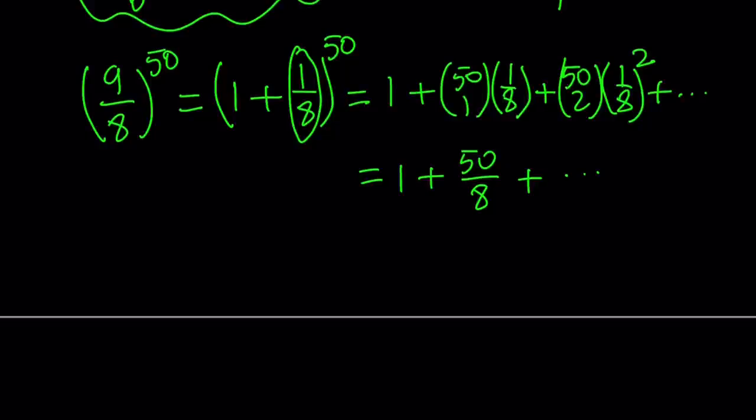Now, why did I do this? Here's my goal. I want to prove that this fraction here, 9 over 8 to the 50th power, which is close to 1, but when you raise it to the 50th power, the answer is going to be greater than 2. That's my claim. And I can easily prove that because 50 over 8 is actually greater than 1. So 1 plus something greater than 1 is going to be greater than 2. That is what I need. So let's go ahead and rewrite it. 9 over 8 to the power 50 is greater than 2. Awesome. How am I going to use it?